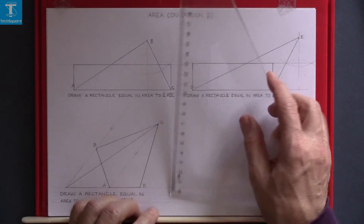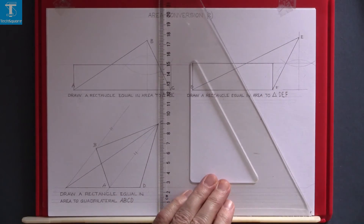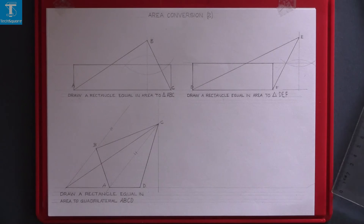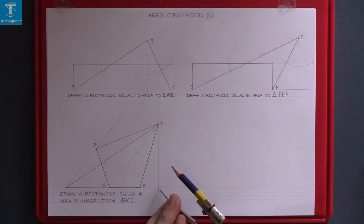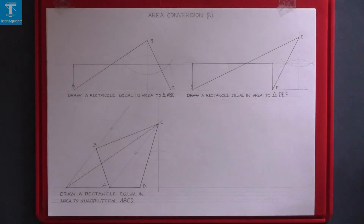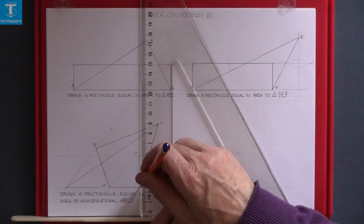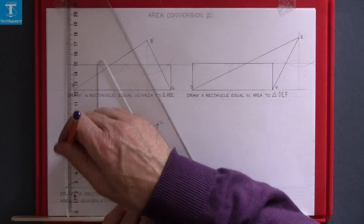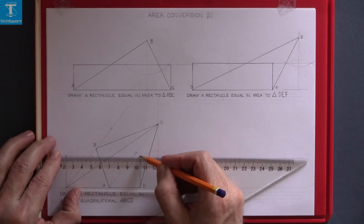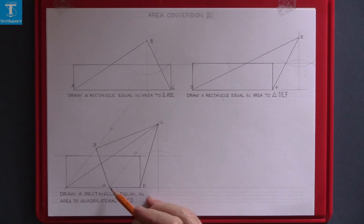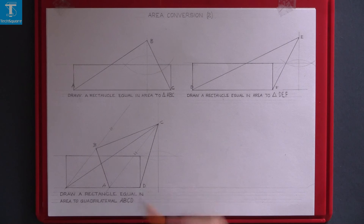Now draw vertically down from C. Bisect this perpendicular height, draw horizontally through and draw up from the two points on the base. And that rectangle is equal in area to the quadrilateral ABCD.